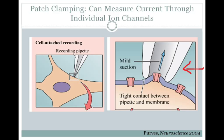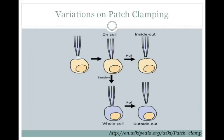In 1991, Neher and Sakmann won the Nobel Prize for developing patch clamping and for the discoveries about the function of single ion channels that they made using patch clamping.